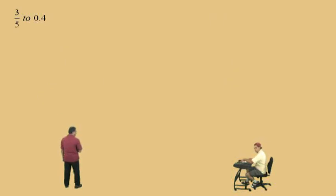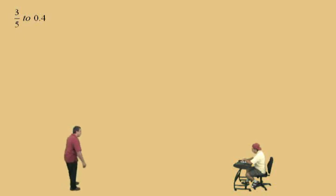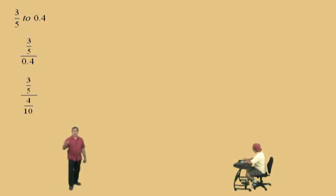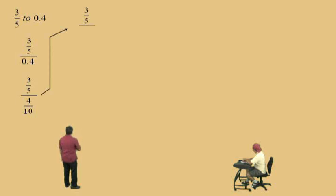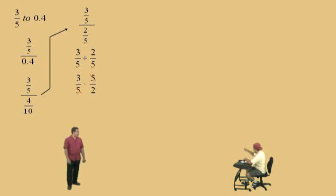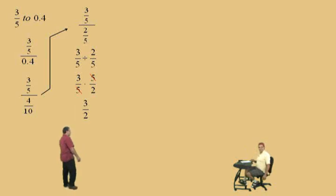Now, 3 fifths to 0.4 — really it's 3 fifths to 4 tenths. So we'll start by writing 3 fifths over 0.4, and we'll write the decimal 0.4 as its fraction 4 tenths. So it's really 3 fifths over 4 tenths. What we're going to do now is write it as a division problem. Now what do we do when we divide with a fraction, Charlie? Multiply by reciprocal. That's right, and we can see the 5's cancel out. So what's our final answer, Charlie? 3 over 2. Very nice. Don't forget to box your answer.